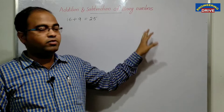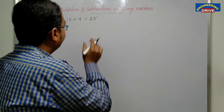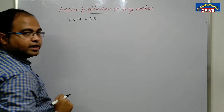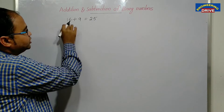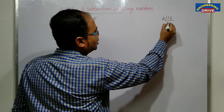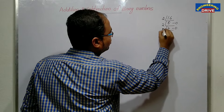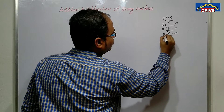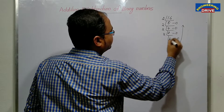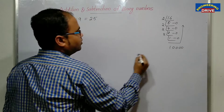What method does our computer use in order to add binary numbers and subtract binary numbers? For that, let us convert 16 and 9 into binary and perform addition and subtraction. How to convert 16 into binary? Simply divide it by 2. The binary form of 16, written from bottom to top, is 1 0 0 0 0.